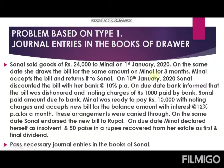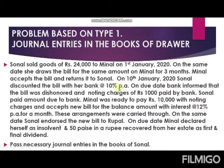Now read the next sentence: on 10th January 2020, Sonal discounted the bill with her bank. What does this sentence tell us? Sonal is using one of the options available to the drawer. The option used here is discounting the bill. In your format, the third serial number is regarding options used by the drawer — and the option used here is discounting the bill.